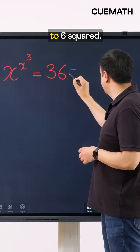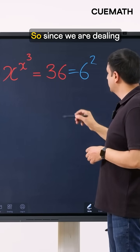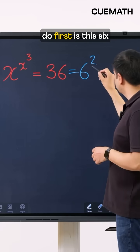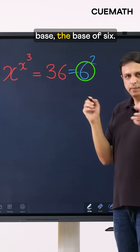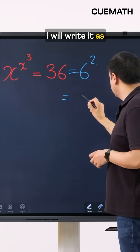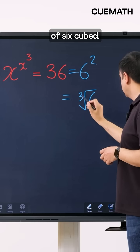So 36 is equal to 6 squared. So since we are dealing with cubes what I'll do first is this 6 base, the base of 6, I will write it as the cube root of 6 cubed.